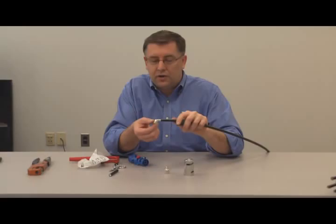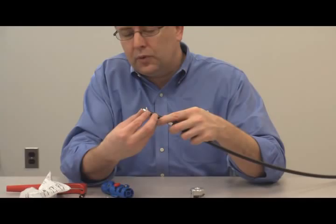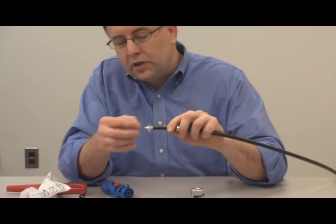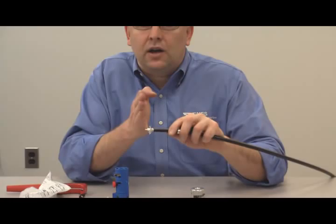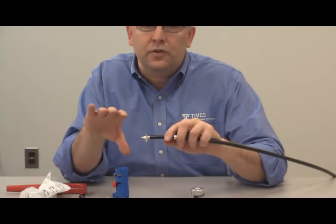Get your EZ400 connector, your shrink boot, your ferrule, your EZ connector. Slide your shrink boot over the cable. Slide your ferrule over the cable. You just take your braid and just fold it back. You don't need to comb it out.